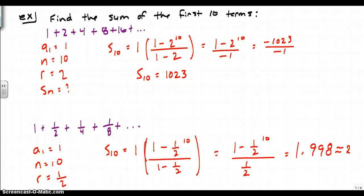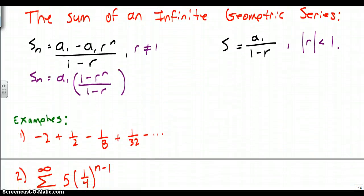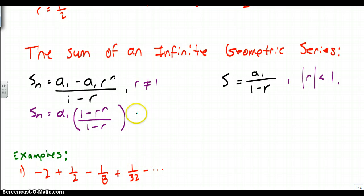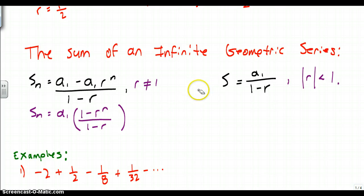Next we're going to move on to looking at the sum of an infinite geometric series. Here are the formulas. The black formula is what you have on your reference sheet; the purple one is the original finite formula we just worked with. From the finite formula, all we've done to get the other form is factor out an a1 — you have a1 minus a1 times r to the n, pull out the a1, and you're left with 1 minus r to the n on top.